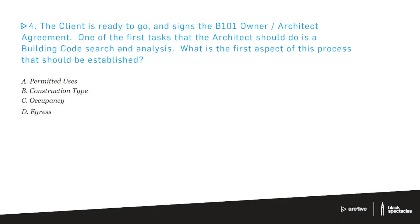The client is ready to go and signs the B101 owner-architect agreement. One of the first tasks that the architect should do is a building code search and analysis. What is the first aspect of this process that should be established?